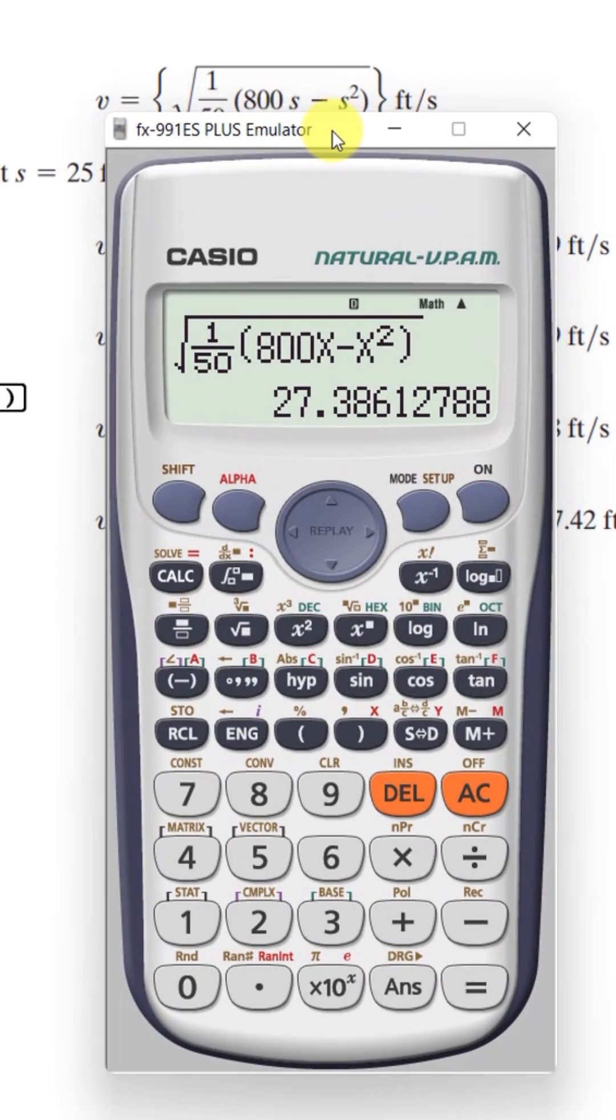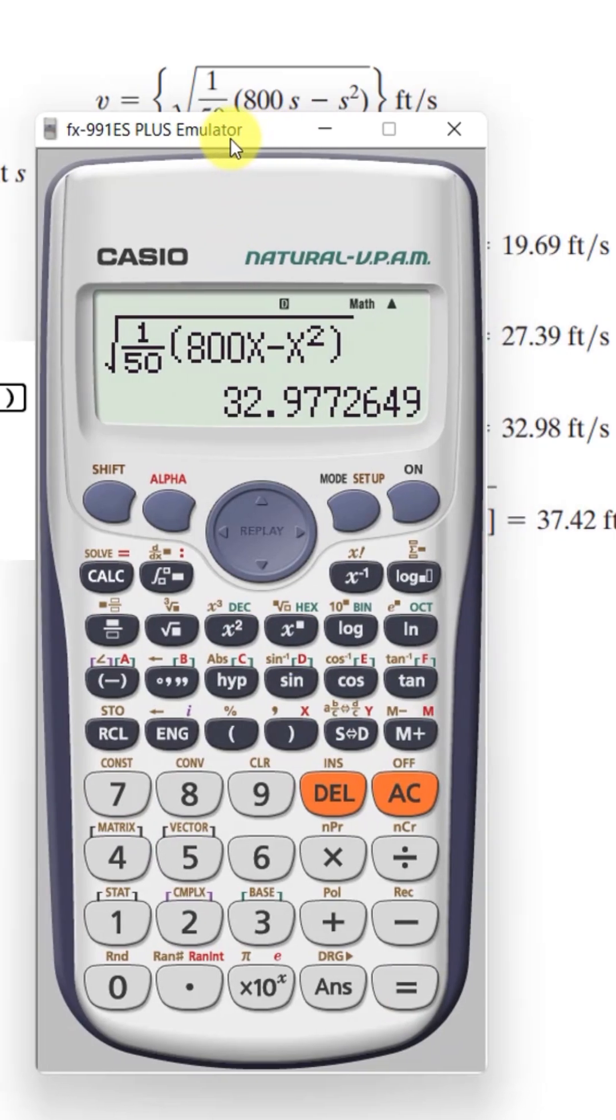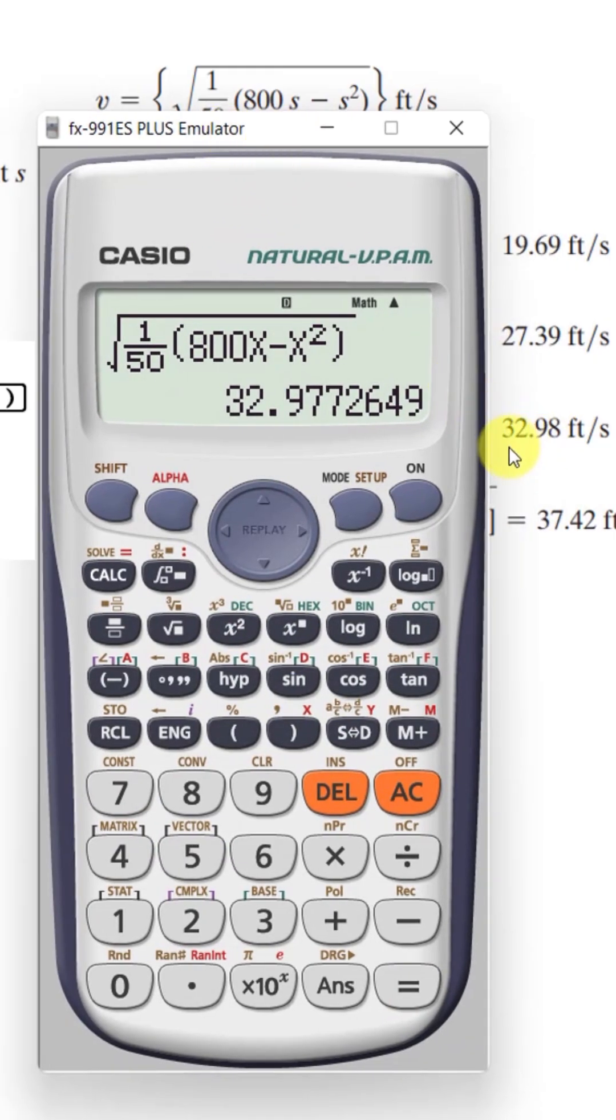Then for 75 calculate, 75 equal, and then 32.9777 which is 32.98. Again press calculate.